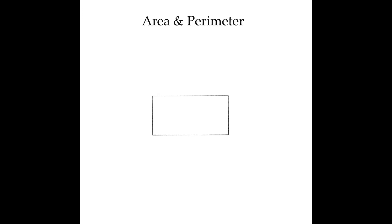In our first example we're going to deal with a rectangle where we are given the area and the length of one side, and we'll discuss how you find the length of a missing side. So if we look at this rectangle and we say that the area is 84 units and the length is 12 units, it means that we have a missing value for one of the legs of this rectangle — the width.